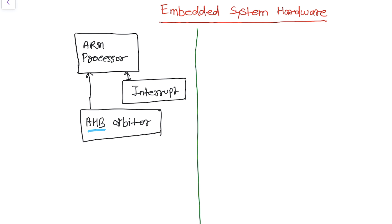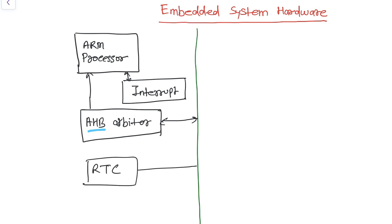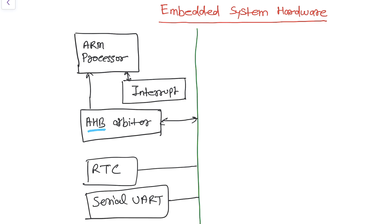This is the AHB and APB bridge — that is, the Advanced High-performance Bus and the Advanced Peripheral Bus bridge. This bridge is connected with the AHB arbiter. Apart from that, it has an RTC, that is a real-time clock. And then it also has a serial UART, which is connected with the AHB and the APB bridge.